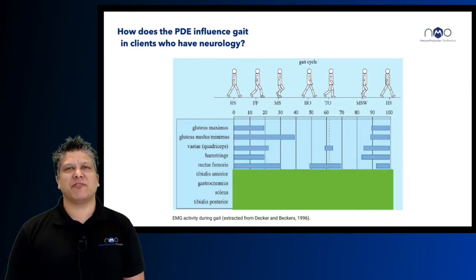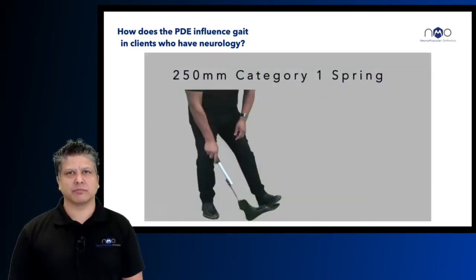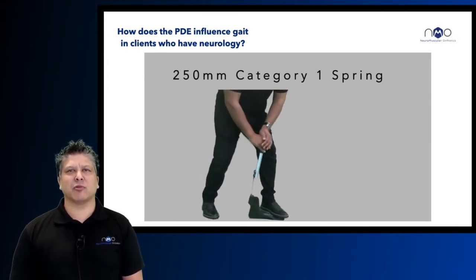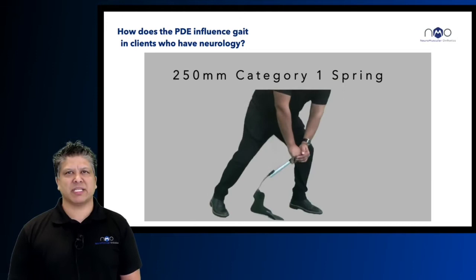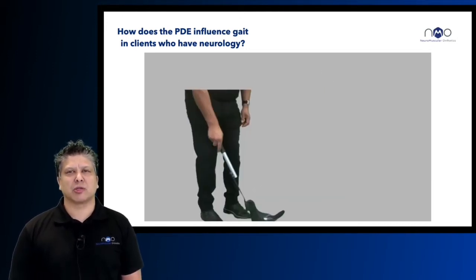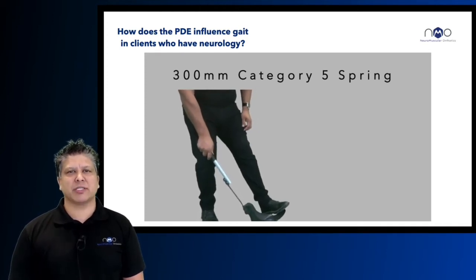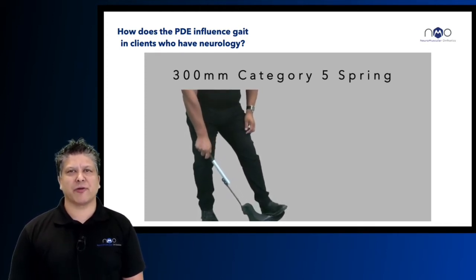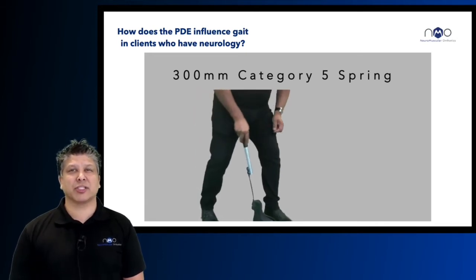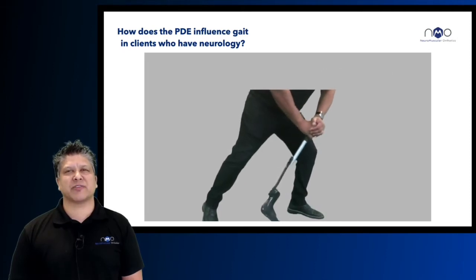But what happens if you lose all muscle power in all groups below the knee? Here I am testing a category one spring in the 250 millimeter length — a quite flexible spring that allows plantar flexion in loading response — in comparison to a category five 300 millimeter spring that doesn't allow hardly any plantar flexion and also doesn't allow a lot of dorsiflexion through stance phase.